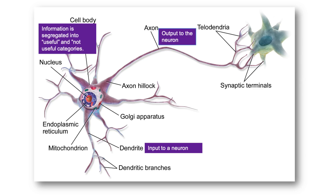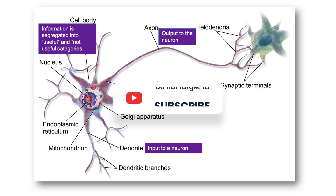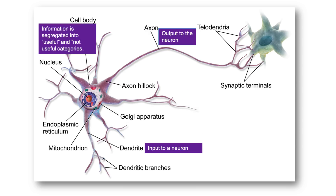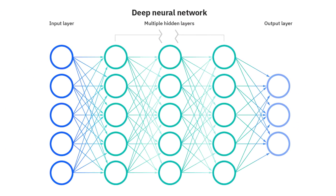If we compare the neural network to our brain, a node is a replica of a neuron that receives a set of input signals similar to external stimuli. Depending on the nature and intensity of this input signal, the brain processes them and decides whether the neuron should be activated or not. In this image, we can see a neural network made of interconnected neurons, each characterized by its weight, bias, and activation function.